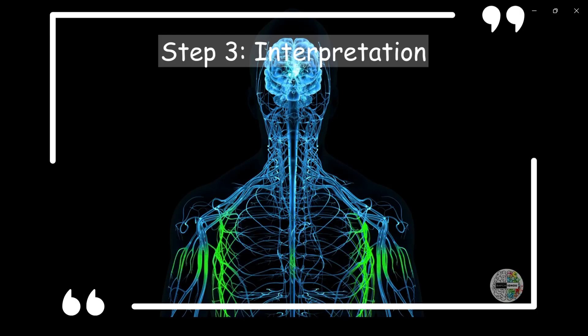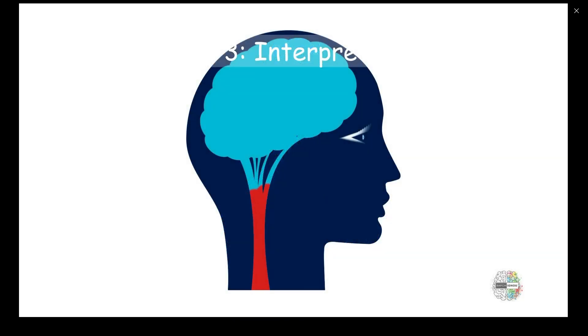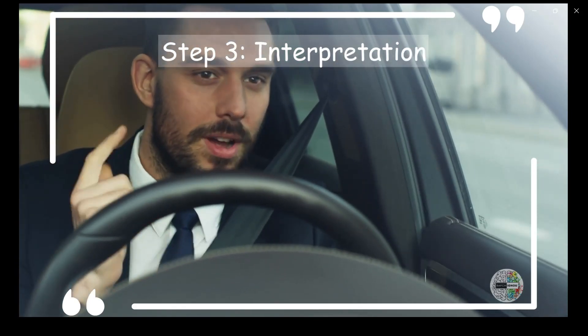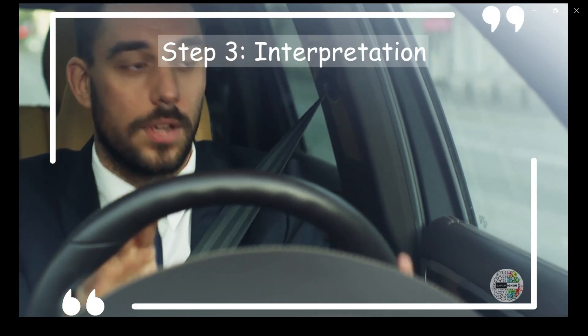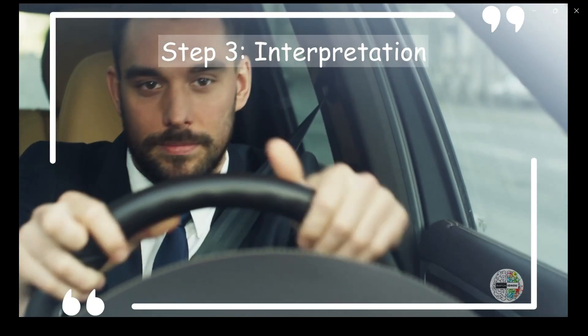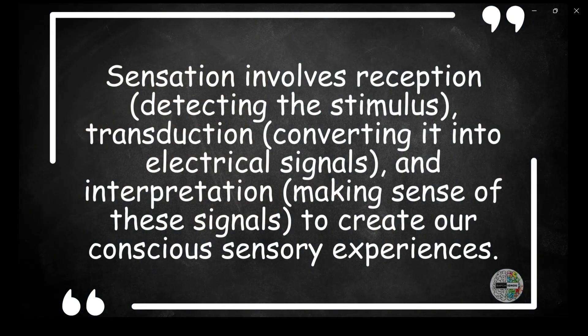Step 3, Interpretation. Interpretation is the final step in sensation where the brain processes and makes sense of the electrical signals it receives. In the case of hearing, your brain's auditory cortex processes the electrical signals to recognize and interpret the sound. It allows you to perceive the sound as music, speech or any other auditory experience. Example, when the electrical signals from your auditory nerve reaches your brain, the auditory cortex processes them. In this case, it recognizes the pattern of the sound as a specific musical note and your brain interprets it as a part of a song or melody.